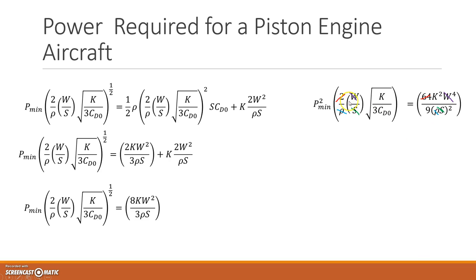Start to cancel out, so the 2 goes into the 64, the W cancels out, the S cancels out, and the rho cancel out, so I'm left with 32 K squared, W to the 3, over 9 rho S.